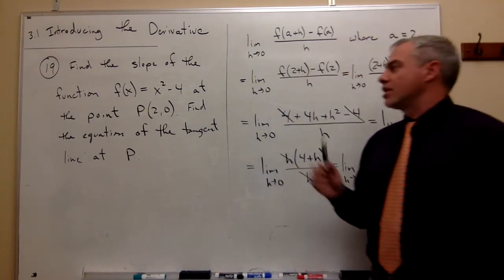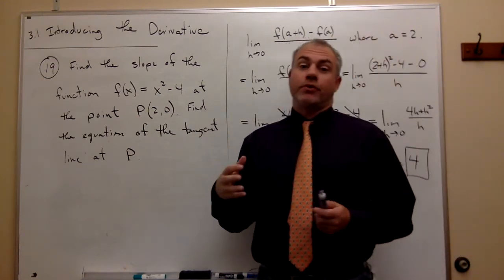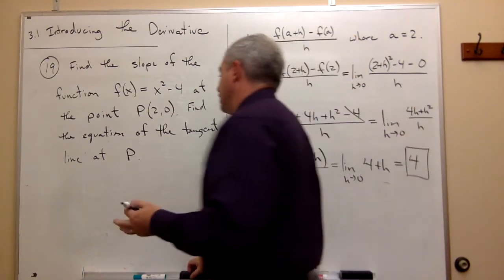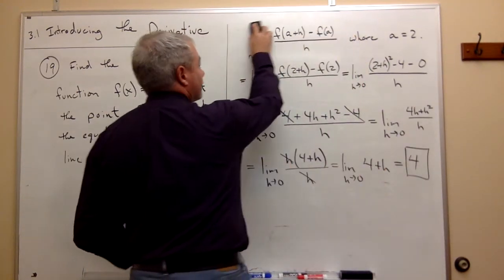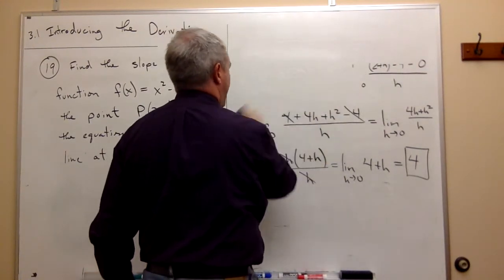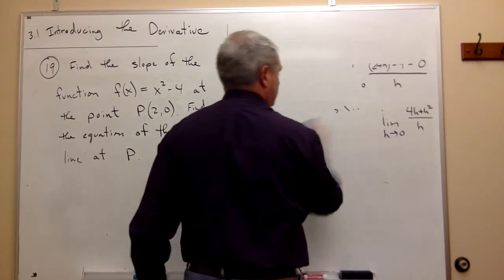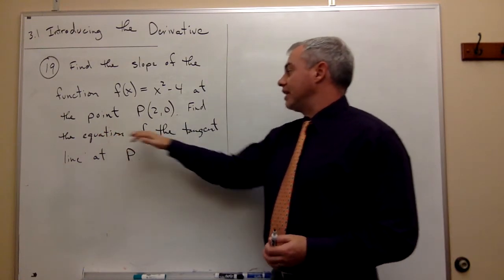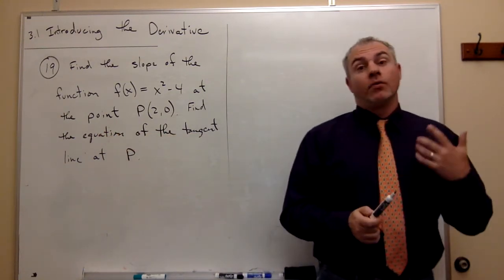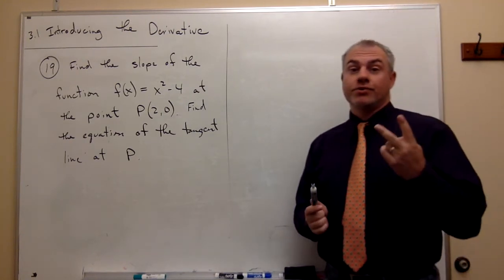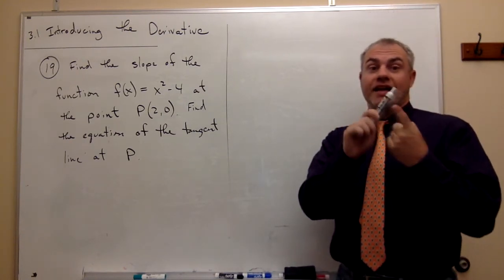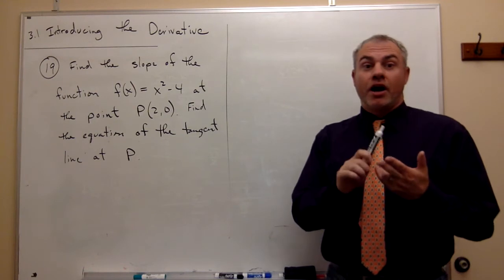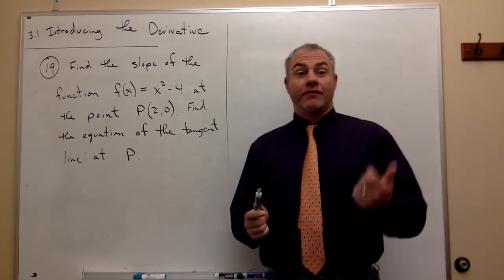The other half of the problem says: now that you know the slope at the point (2, 0), can you find the equation of the tangent line at that point? Let's go ahead and do that. We know that the slope is 4. To find the equation of the tangent line, I need two things: a point that the line goes through — and I have (2, 0) — and the slope of the line, which we figured out is 4.